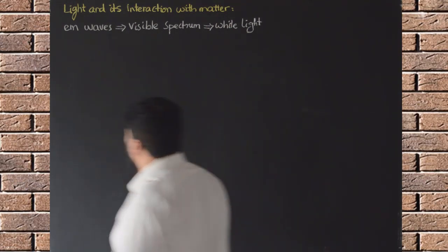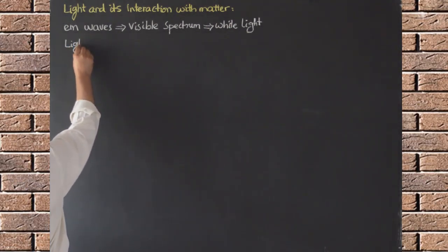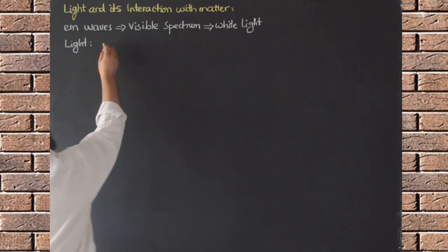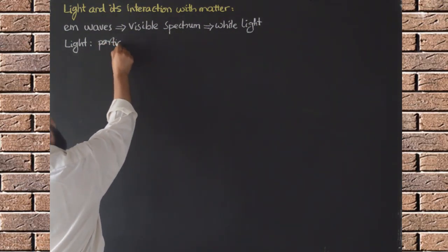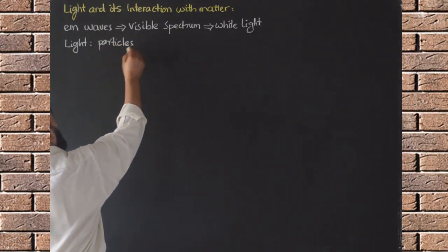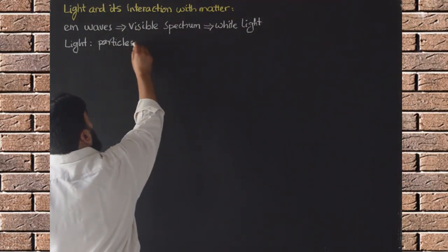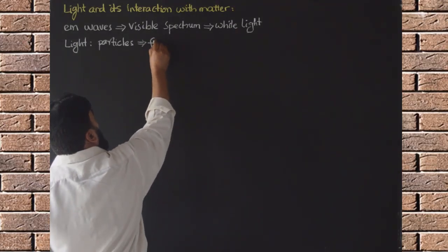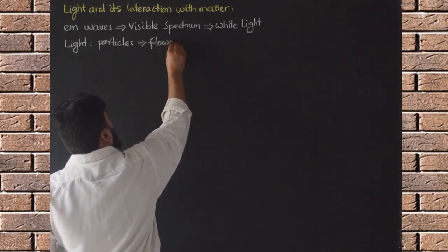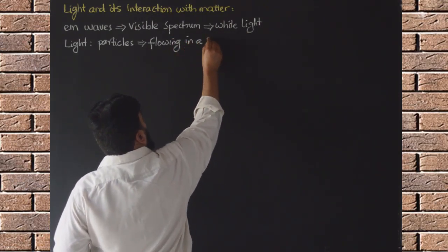Light is an electromagnetic wave and it is composed of very small particles. These particles can be called corpuscles, quanta, or photons, and these particles are actually flowing in the form of a wave.